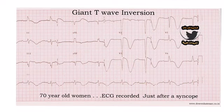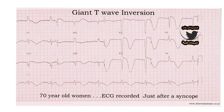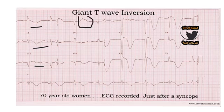See this ECG for a 70-year-old woman presenting with Giant T wave inversion after syncope. Features of Giant T wave inversion are visible on all leads, except lead I and AVR, which is positive here.